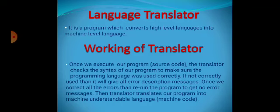So the translator executes our program to find out errors. If there is any error, it will give a message. Once you correct all the errors, you need to rerun the program. If no error is found, the translator translates the high level language into machine level language. That is how a translator works.